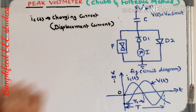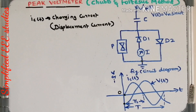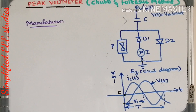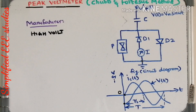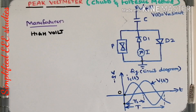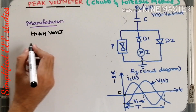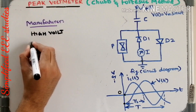The waveform shown is purely sinusoidal, but practically you won't get such perfect waveforms — there will always be fluctuations. Many manufacturers produce peak voltmeters. One such company produces a bulk amount of peak voltmeters in various technically specified varieties. You can observe their website by googling HiVolt.com; they produce peak voltmeters in different series.